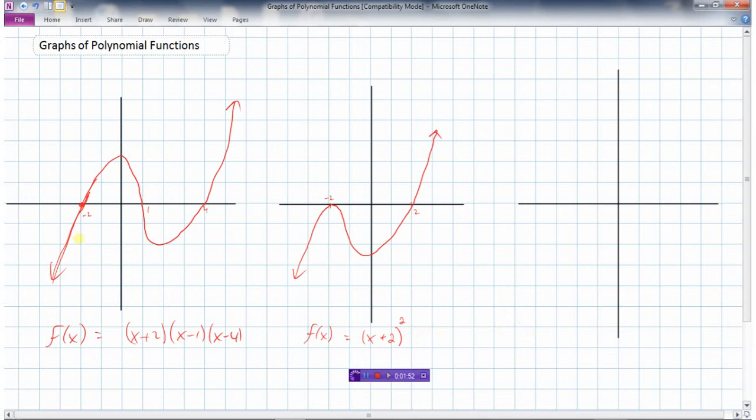So when the graph comes straight across the x-axis like it did in this first example here, there's only one factor at that root. But where it bounces off the x-axis there'll be two of them. And then at this one over here, so at the root of 2, the graph goes straight across the x-axis, so there'll only be one factor of x minus 2.